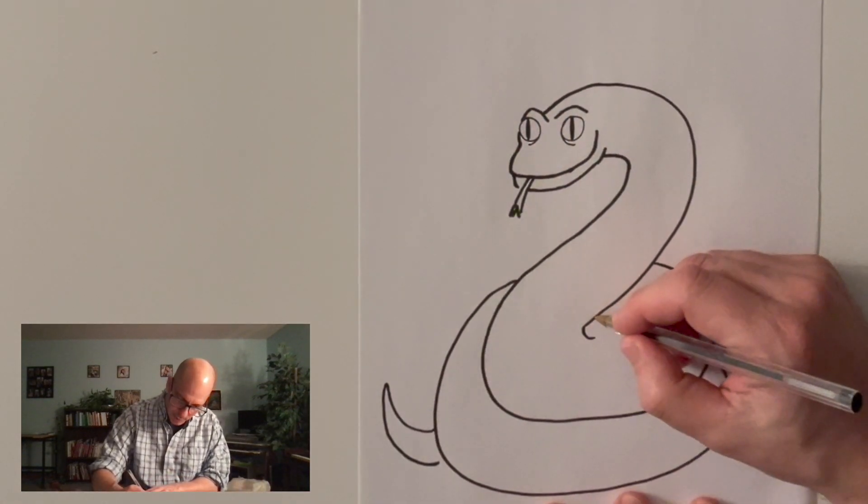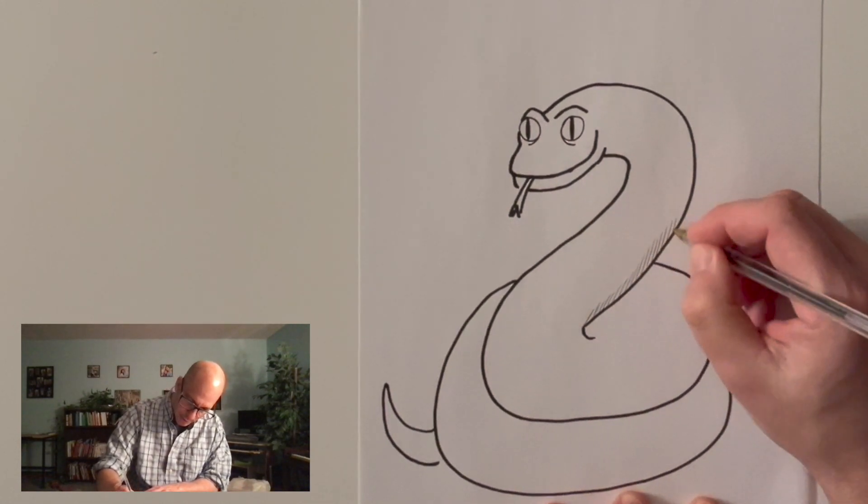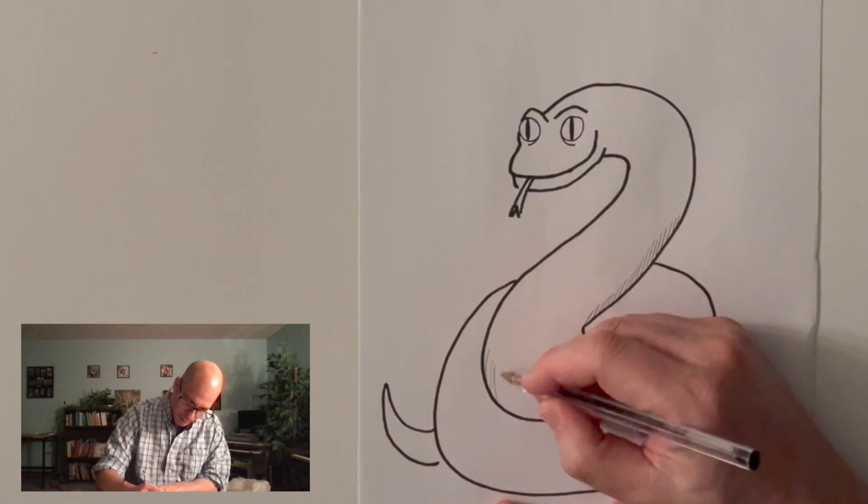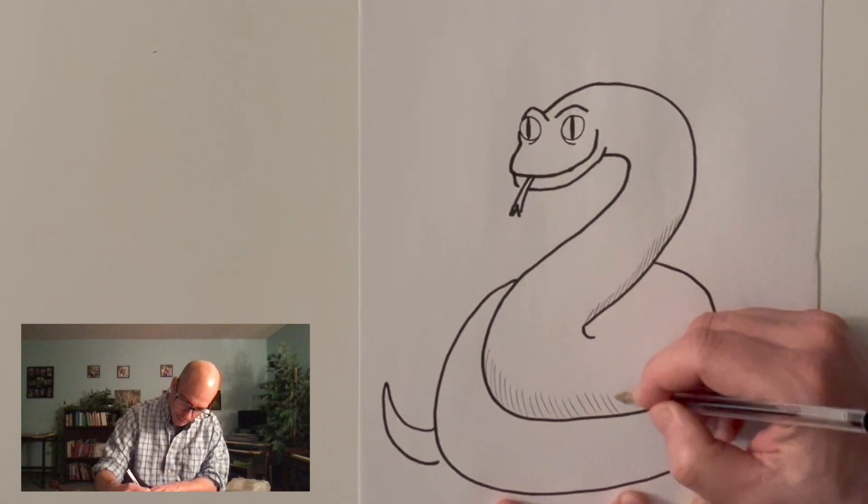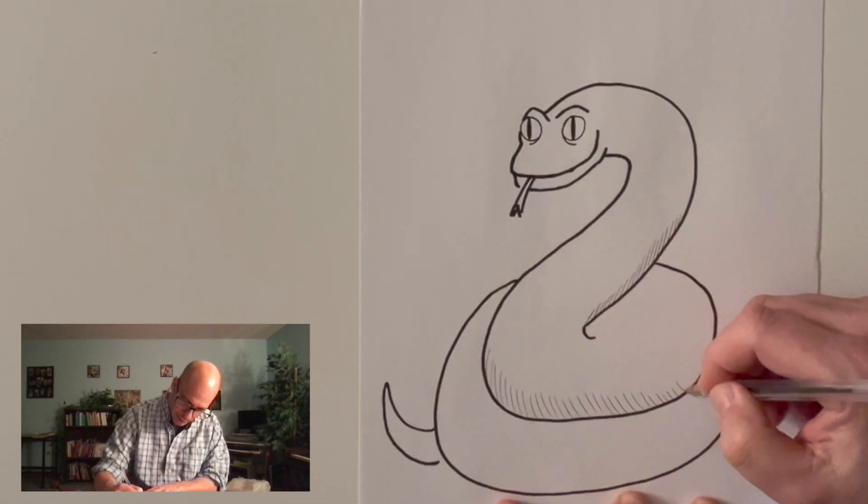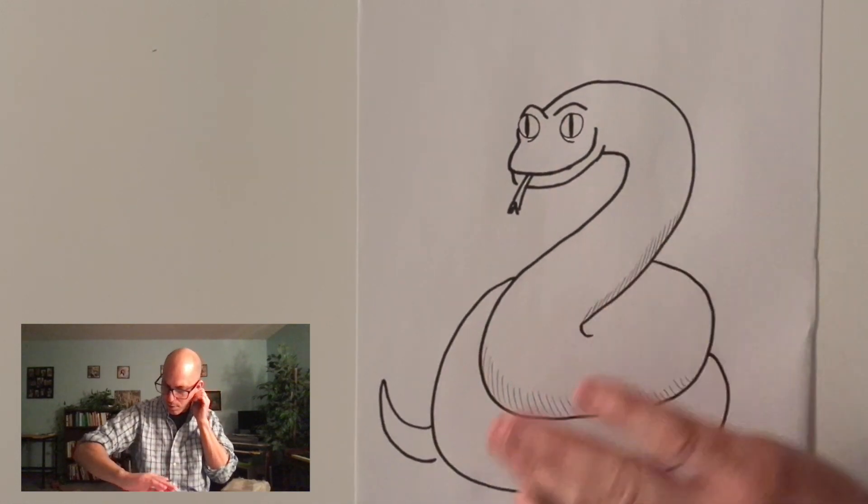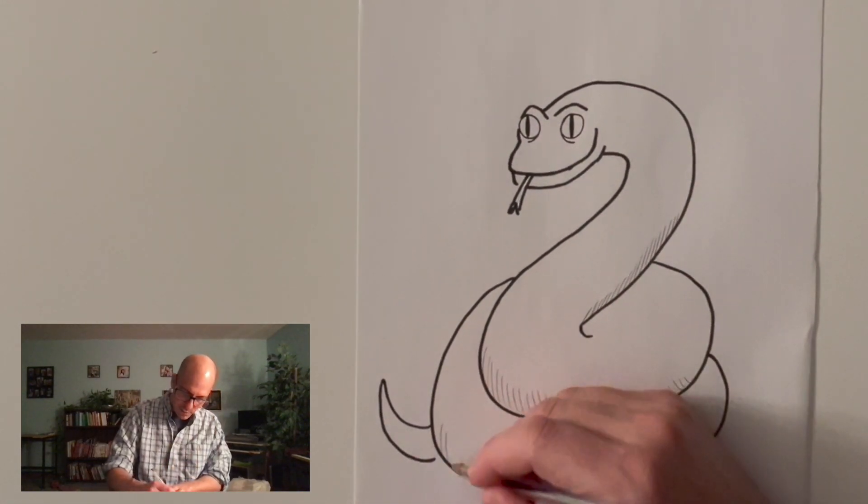Snakes have these really nice kind of beefy bodies. So I'm going to make my snake have a little bit of volume to it, make its body a little bit rounded here. I'm shading kind of down towards the bottom to create that rounded surface of my snake.